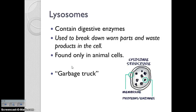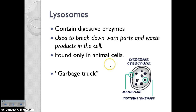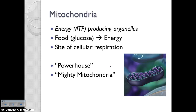Next up we have lysosomes — the garbage trucks of the cell. They contain digestive enzymes which allow them to break down used, old, worn parts and waste products in the cell. They break down old cell parts so they can be either removed from the cell or used again. Lysosomes are found only in animal cells. The mitochondria — the mighty mitochondria — is the powerhouse of the cell, because it produces energy through the process of cellular respiration. Cellular respiration is the opposite of photosynthesis: food, glucose, is broken down to create energy.